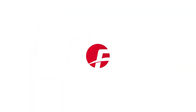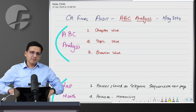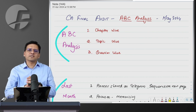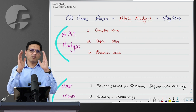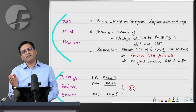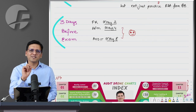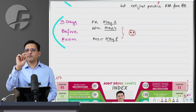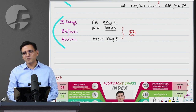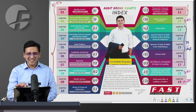Let's start with the ABC first. CA Final Audit ABC - I have made it in three parts: one chapter-wise overall subject ABC, one topics-within-chapters ABC, and one question bank ABC with specific marking. After this we'll discuss the last month revision plan. Our AFM paper completes on the 4th, and then directly on the 8th is the audit paper - so we can prepare for audit very comfortably.